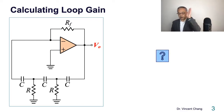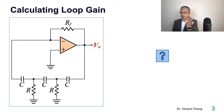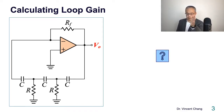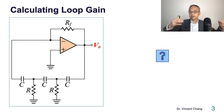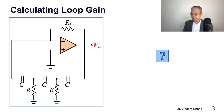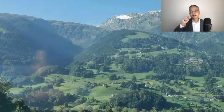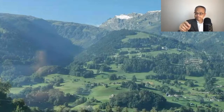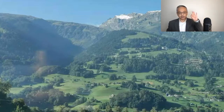You have to solve the loop gain first. The tough part is solving the loop gain. Once the loop gain is found, it becomes easy to meet the Barkhausen criterion to answer both questions. I'll give you 10 minutes — let's try to pause. Take a screenshot of this circuit and try to solve this.